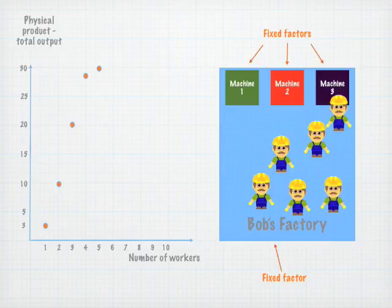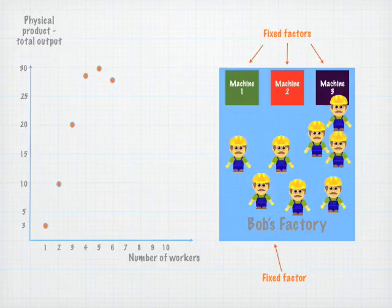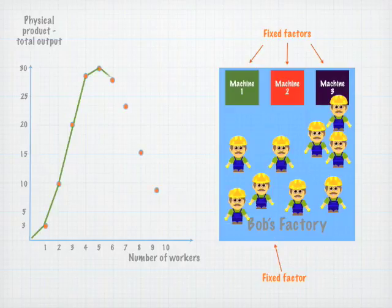The sixth and subsequent workers actually cause total output to fall, as the factory becomes overcrowded and less productive. Perhaps a case of too many cooks spoiling the broth.